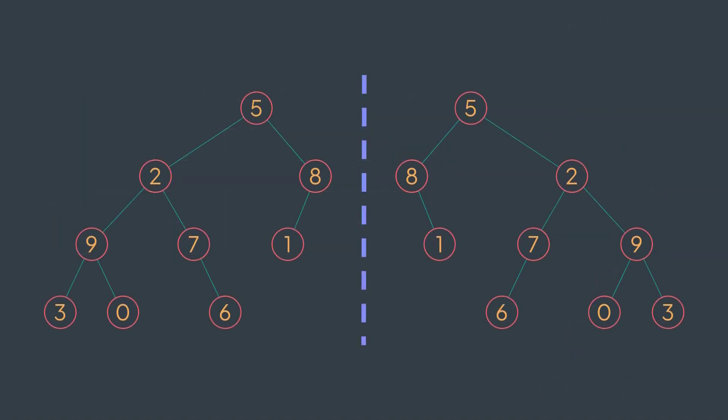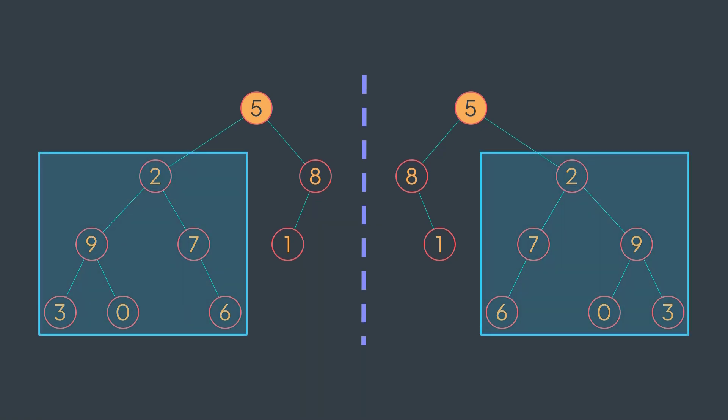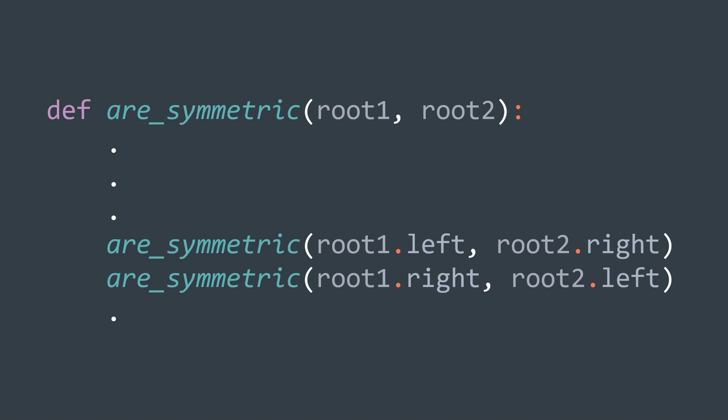If we take two symmetric trees, we can notice that they have the same root value, that the left subtree of the first one is symmetric to the right subtree of the second one, and that the right subtree of the first one is symmetric to the left subtree of the second one. We verify that root values are equal, so we need to check the remaining two conditions recursively — because we're building a function that checks if two binary trees are symmetric, which is exactly what we need.